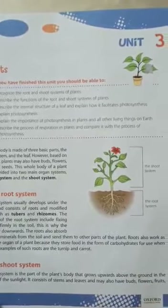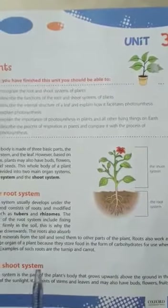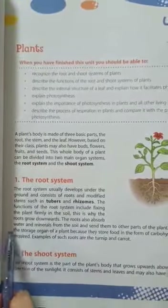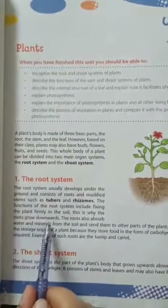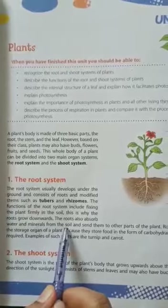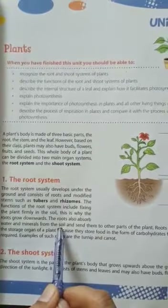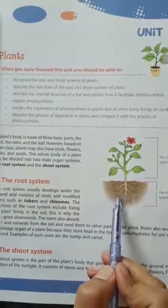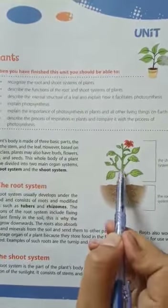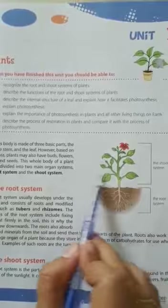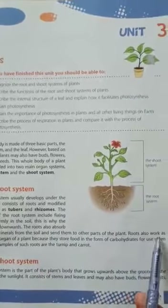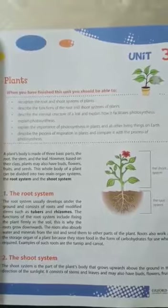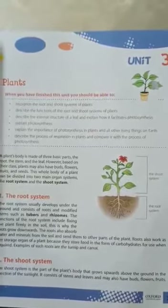So its function is to make the plant stand. The roots also absorb water and minerals from the soil — soil se water aur minerals absorb kerta hai — and sends them to other parts of the plant. The root also works as the storage organ, just like organs in our body.